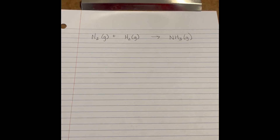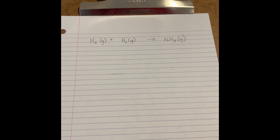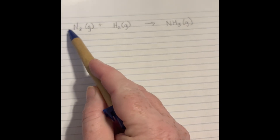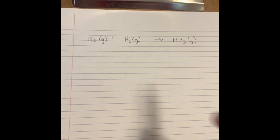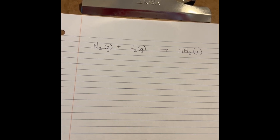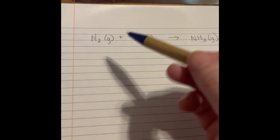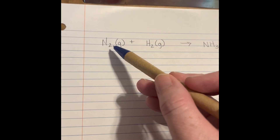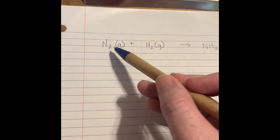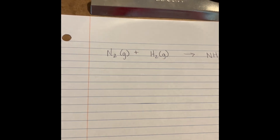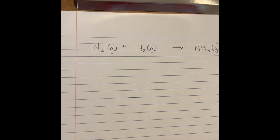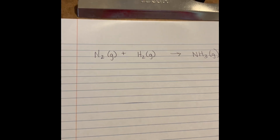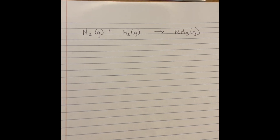A couple of things about balancing chemical equations. Your coefficients cannot be negative — before your molecules, you will not have a negative number. Do not change the subscripts. If you are given a subscript, you cannot change it — that would actually change the molecule and completely change the chemical reaction.